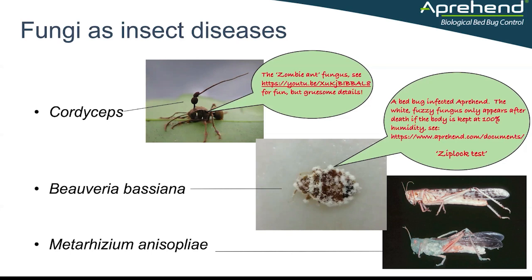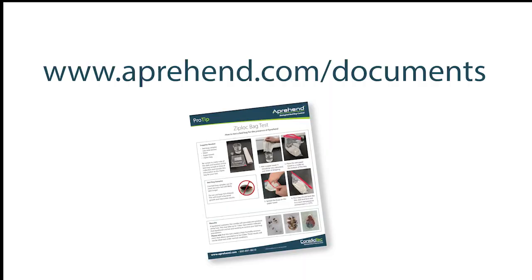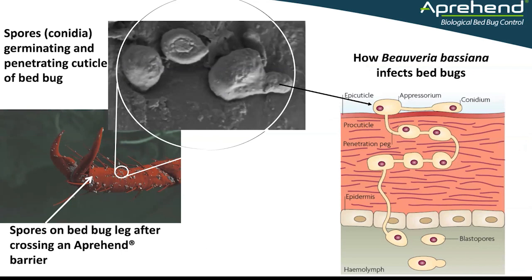This is the fungal infection process. On the left-hand side you can see the front leg of a bed bug with the two claws it uses to climb vertical surfaces. The small grey dots visible between the hairs on the legs are spores picked up by that bed bug simply by crossing a two-inch barrier of Apprehend. This is a scanning electron micrograph at very high magnification. Zooming in further, we can see individual spores on the cuticle of the insect germinating and creating what we call a penetration peg to go down inside the bed bug.